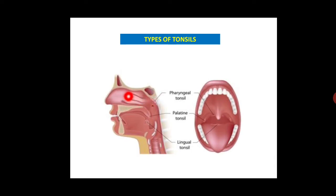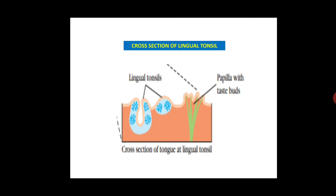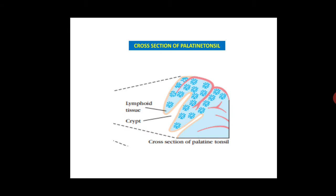Pharyngeal tonsil is present in the roof of the nasopharynx. Palatine tonsil is located on the sides of the back of the mouth, while lingual tonsil is located at the base of the tongue. This is a cross-section of the lingual tonsil in which the lymphoid follicles are arranged, shown as blue dots.